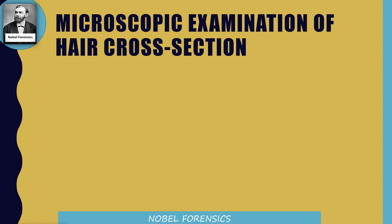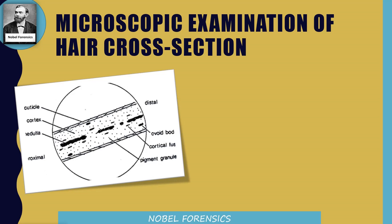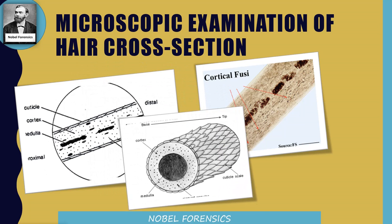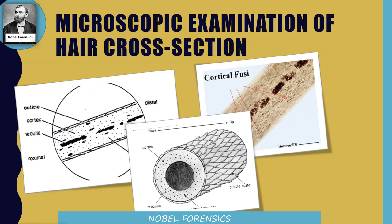Coming to the microscopic examination of a hair cross section — this is how hair looks under the microscope. The outer layer is the cuticle, the middle central part is the medulla, and the remaining layer is the cortex. The cuticle has cells called scales. There is cuticle, cortex, and medulla; the middle portion is the medulla.